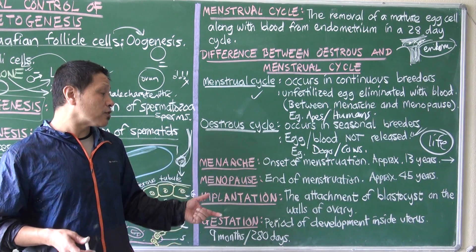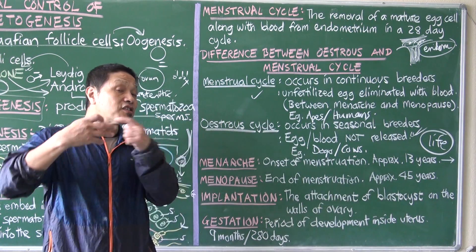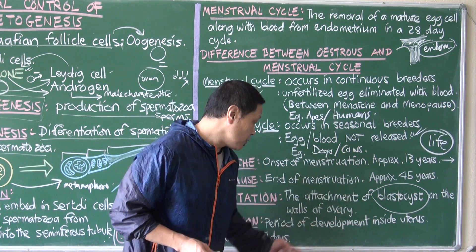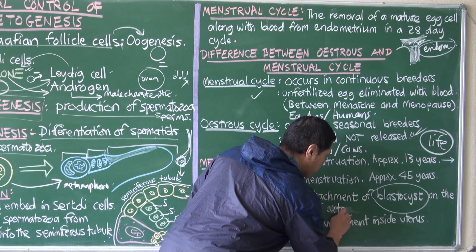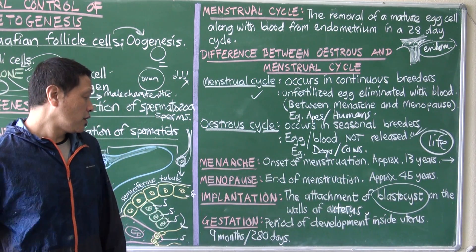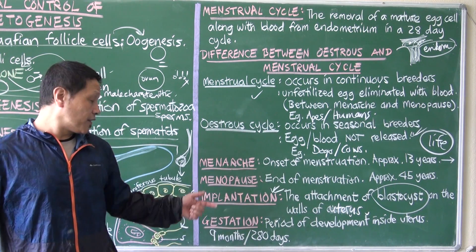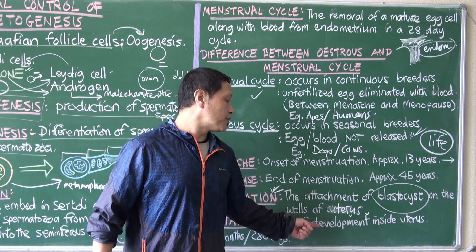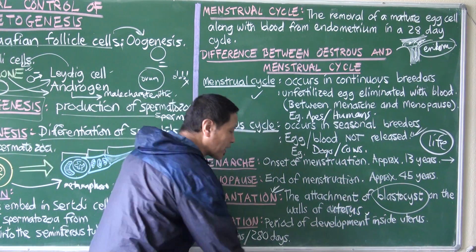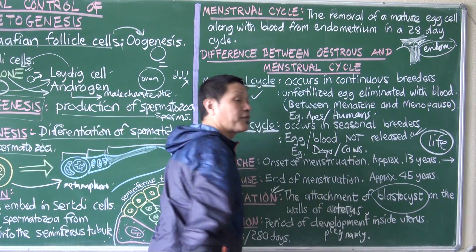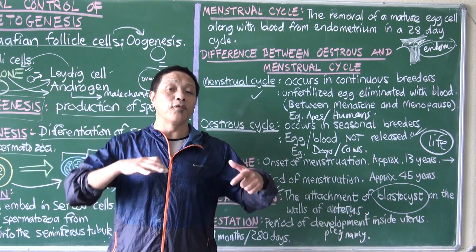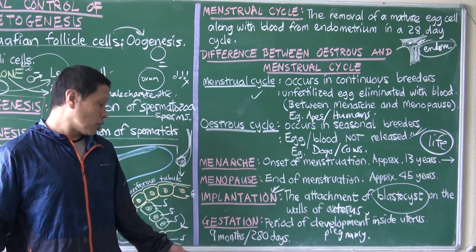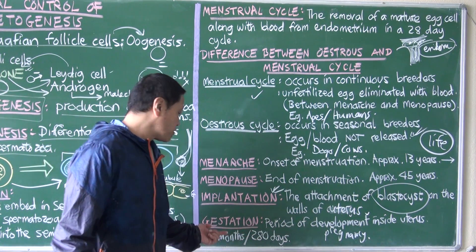Implantation is the attachment of a fertilized egg, which turns into a structure called a blastocyst, onto the walls of the uterus. Gestation is the period of development inside the uterus, also called pregnancy — the time required for the embryo to develop into a fully grown fetus. In humans, this is almost 9 months or 280 days. For every different species, there is a different gestation time period.